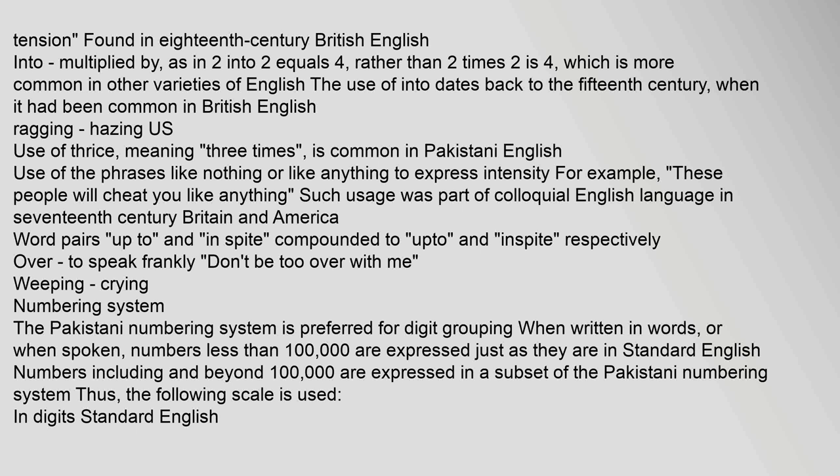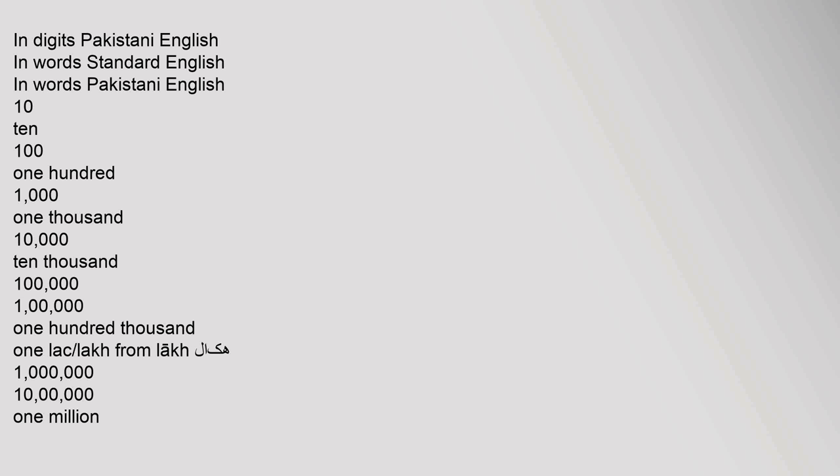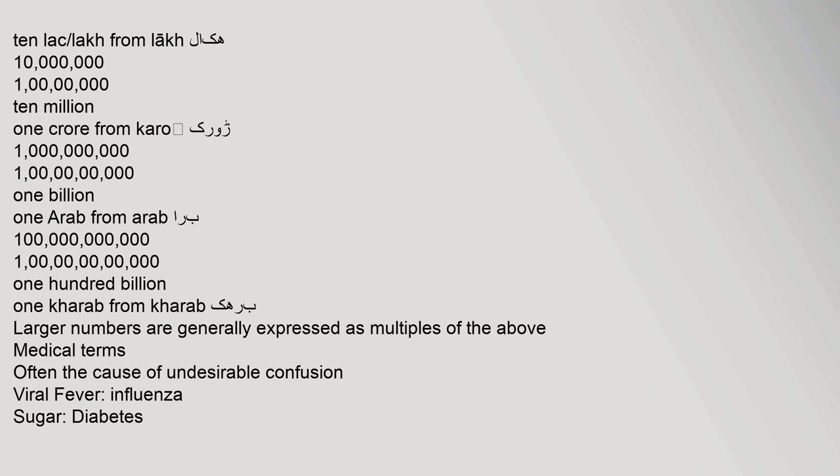The Pakistani numbering system is preferred for digit grouping when written in words or spoken. Numbers less than 100,000 are expressed just as in standard English. Numbers including and beyond 100,000 are expressed using a subset of the Pakistani numbering system, with its own scale for lakh, crore, and larger numbers, which are generally expressed as multiples of these units.